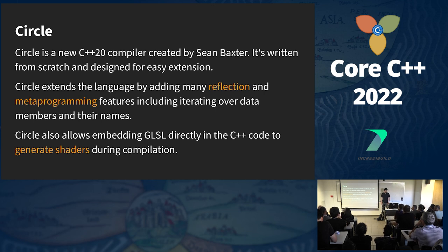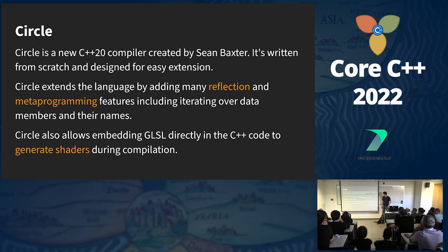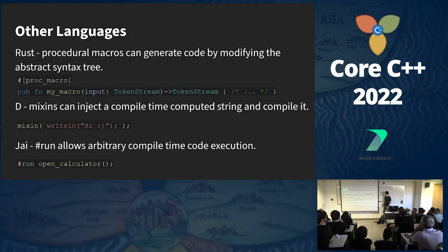Circle is a new compiler by Sean Baxter. It has many reflection and meta-programming language extensions, such as iterating over data members and their names. Circle also allows embedding GLSL directly in C++ code to generate shaders during compilation.